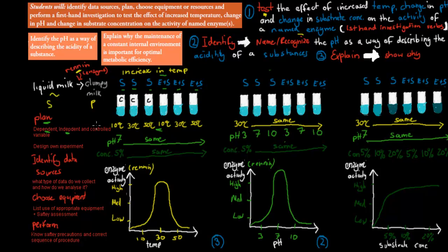The control variables are things that we keep the same. With the temperature experiment, we keep the pH and the concentration the same but change the temperature. With pH, we change the pH but keep the other two the same. And with substrate concentration, we keep the pH and temperature the same but change the concentration. So: control is what we keep the same, independent is what we're changing.